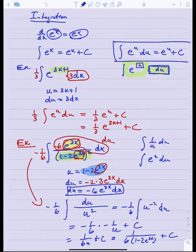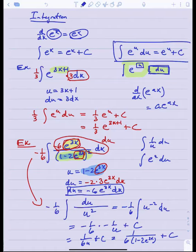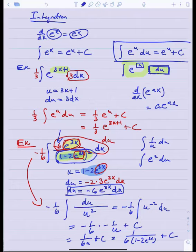That example showed what to think about when an integrand contains an exponential function in two different places — here in the numerator and denominator. For e to the ax, the derivative is just a times e to the ax. If I'm willing to insert a needed constant, I can always manufacture the derivative of e to the ax in the other part of the integrand when that e to the ax occurs twice. When I saw a big u-squared in the denominator, I realized I should be able to make a du in the top — that's the pattern to look for when you see two different exponentials together.